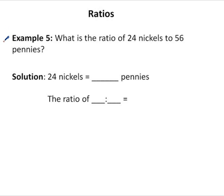What is the ratio of 24 nickels to 56 pennies? There are two ways you could answer this. The straightforward answer is 24 to 56, but they want you to think a little deeper here.